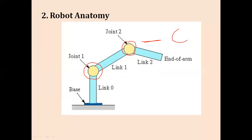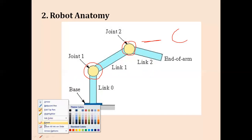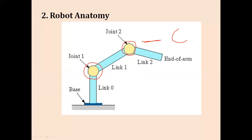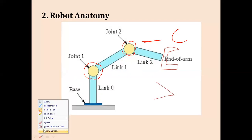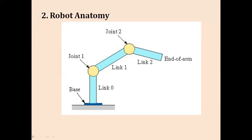The next important term is the end of the arm, also called the end effector. At the end of this particular link, if you have a gripper it is used for lifting objects. We can also use a probe for welding purposes, such as spot welding. Whatever application you are using, you place that particular effector at the end of the robotic arm — whether it is painting, spot welding, or pick and place operations, that type of effector is placed there to perform the application.